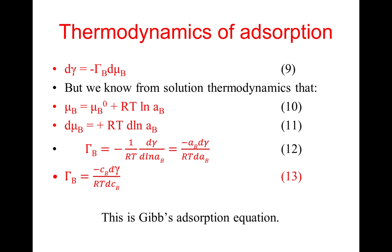So Γ_B = -c_B × dγ/(RT dc_B). This is what is called Gibbs adsorption equation. It relates surface excess concentration, Γ, to the concentration c_B at a given temperature.